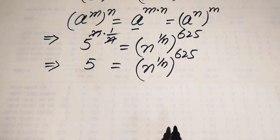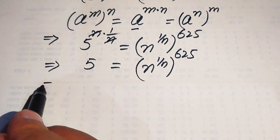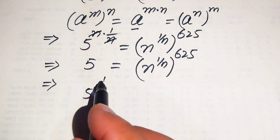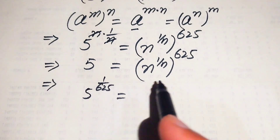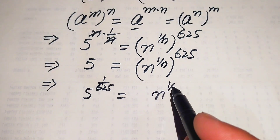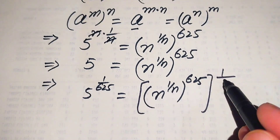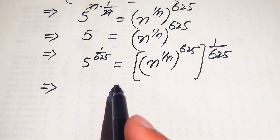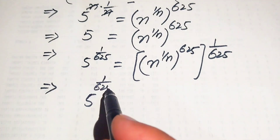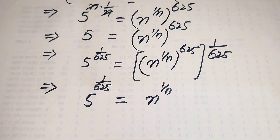We have moved the variable terms to the right-hand side. Now we move the constant term to the left-hand side. To remove this 625, we take the 1 over 625th root on both sides — in other words, we raise both sides to the power of 1 over 625. After taking this power, we again use the exponential rule: we multiply the exponents, giving us 5 to the power of 625 times 1 over 625, which equals n to the power of 1 over n.